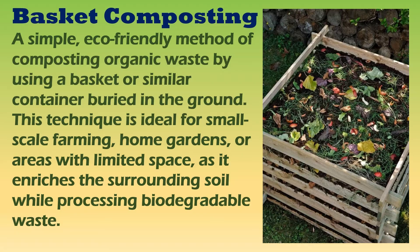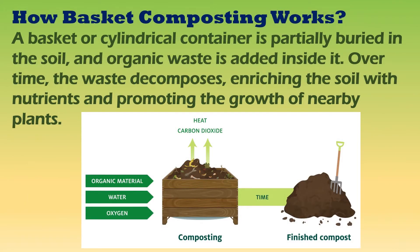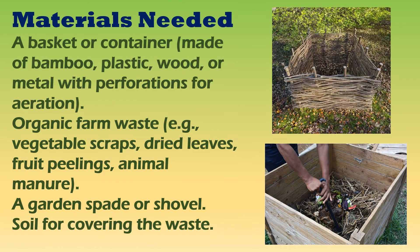How does basket composting work? A basket or cylindrical container is partially buried in the soil, and organic waste is added inside it. Over time, the waste decomposes, enriching the soil with nutrients and promoting the growth of nearby plants. To make composting effective, start by chopping large pieces of waste into smaller bits to speed up decomposition. Balance your wet and dry materials — mix green waste like vegetable scraps and fruit peels with brown waste such as dry leaves and sawdust.